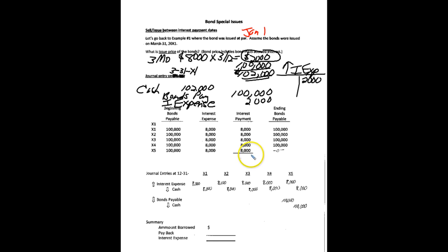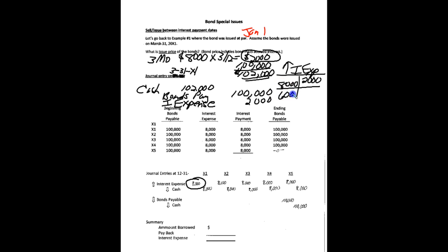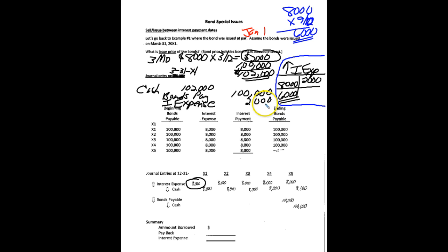Here's the amortization schedule for the bonds, which has not changed from example number one — this is what we saw in the earlier recording. There would be interest expense and cash paid throughout. In the first year, there would have been a debit to interest expense of $8,000. When we post that, we end up at the end of the year with $6,000 in interest expense, which is exactly what we would want. In the first year, of the $8,000 of interest, we really would have incurred 9 out of 12 months of that, which is $6,000. So we processed it by first recording the $2,000 issue price related to interest as a negative interest expense, then recording interest as normal on the payment date, and we end up with the right amount of expense.